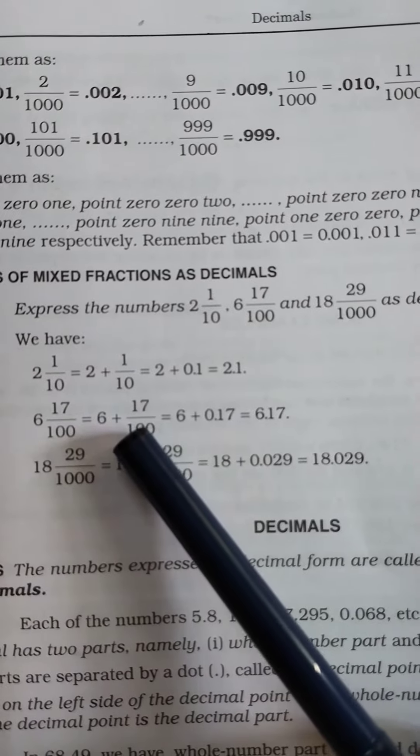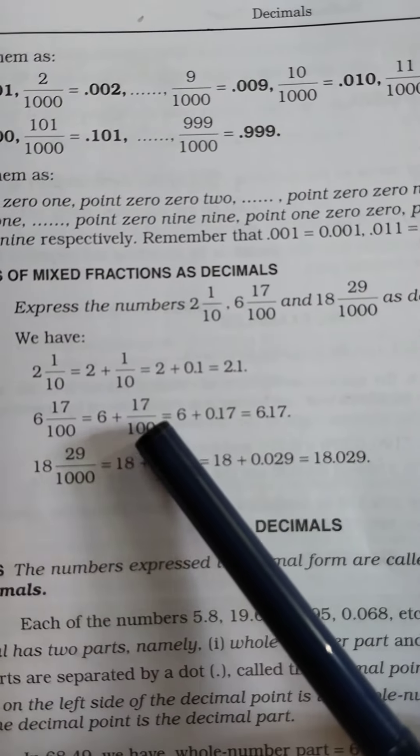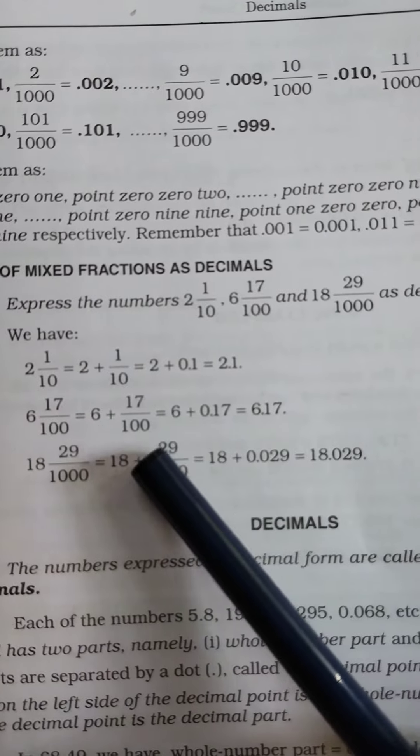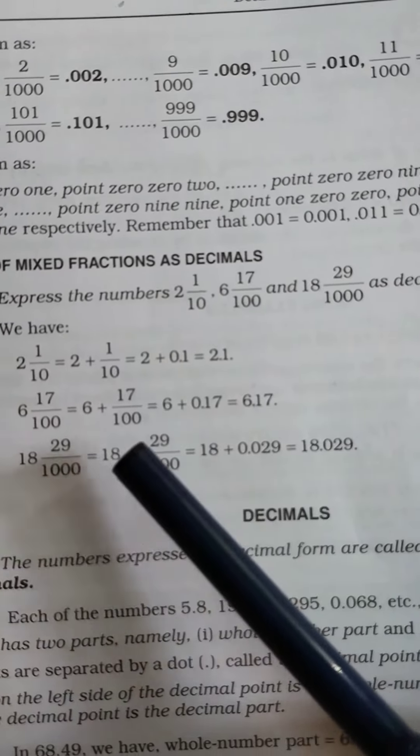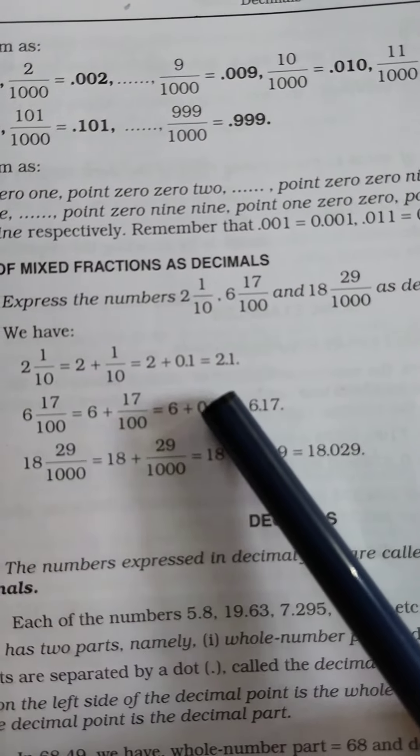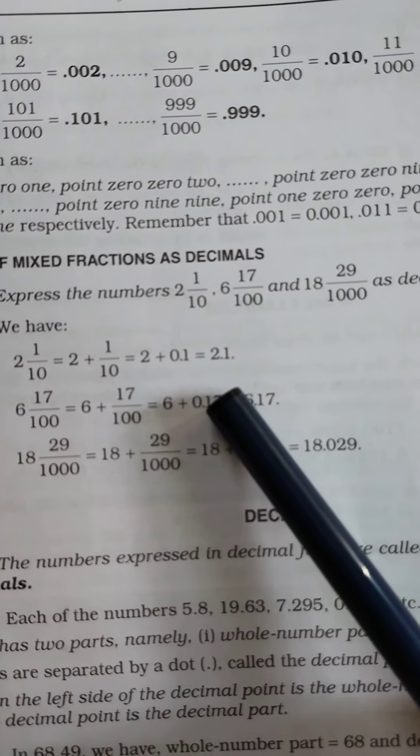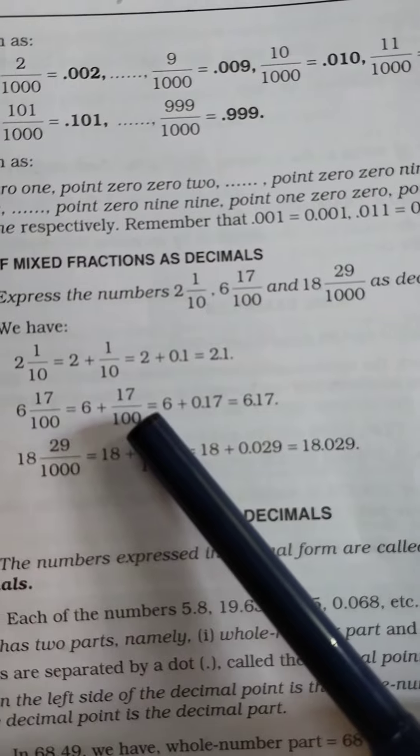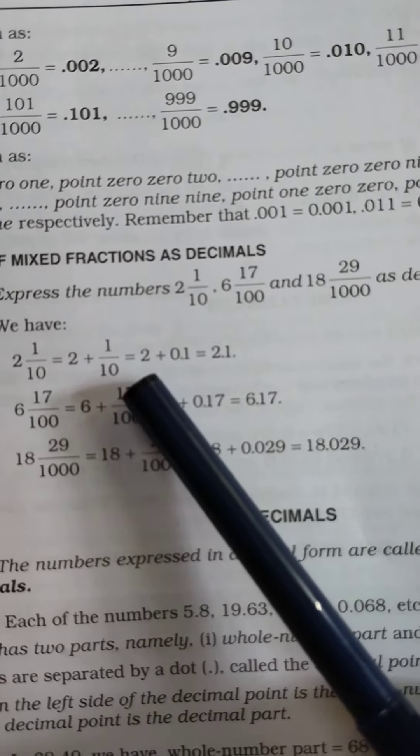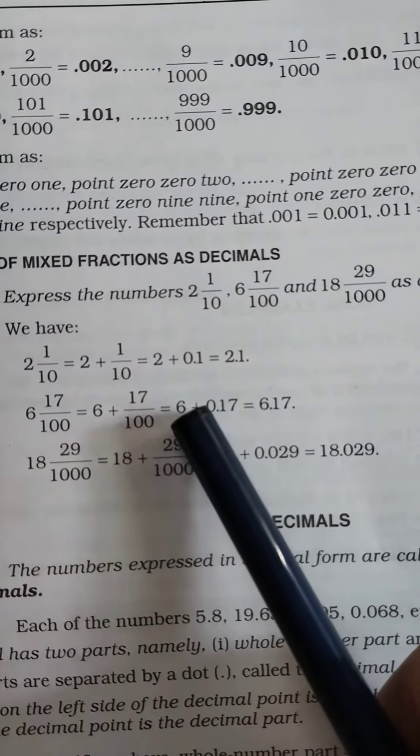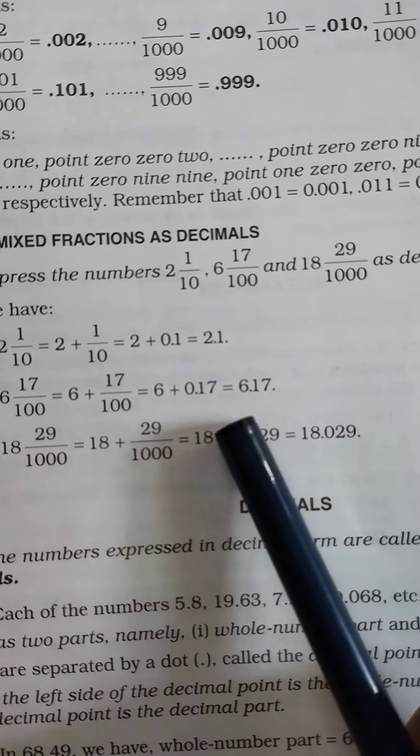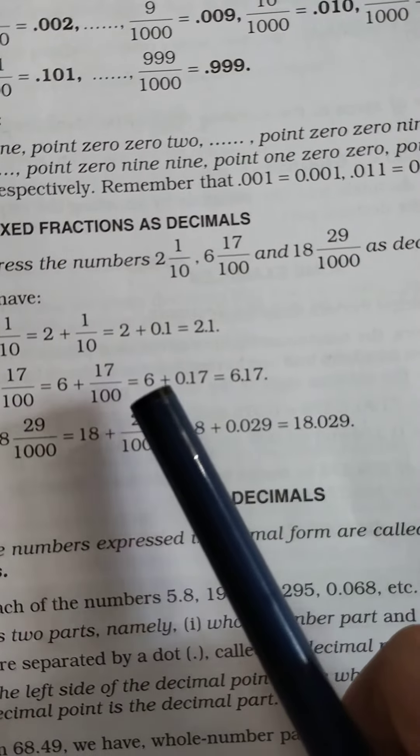Just like that, 6 and 17/100 will be written as 6 plus 17/100. Now if you convert this fraction into a decimal number, it will be 6 plus 0.17, because there are two zeros after 1, so after the decimal point there will be two digits on the right-hand side. The answer will be 6.17.